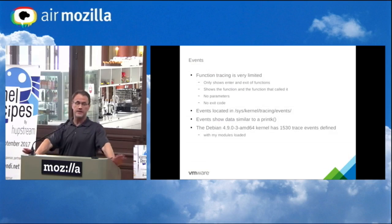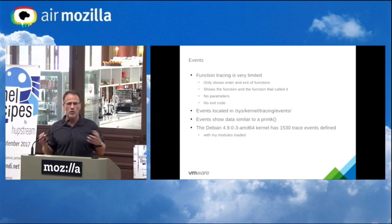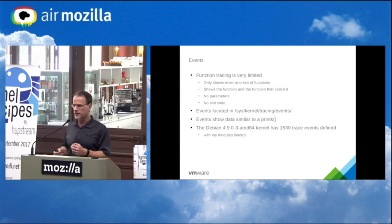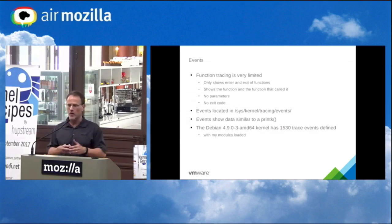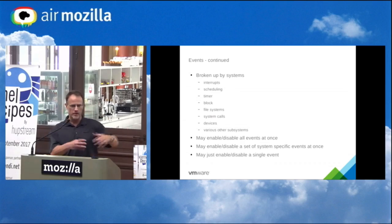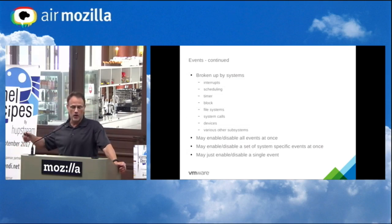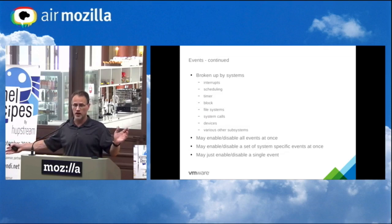Function tracing is great but limited — it does entry and exit, shows the parent function, but you don't have exit codes, parameters, or details of what the function is actually doing. This is where events come in. Events are like printk's with static points inside the kernel. My Debian kernel had 1,530 events with modules loaded, broken up by systems: interrupts, scheduling, timers, block, filesystems, syscalls, devices, and more.